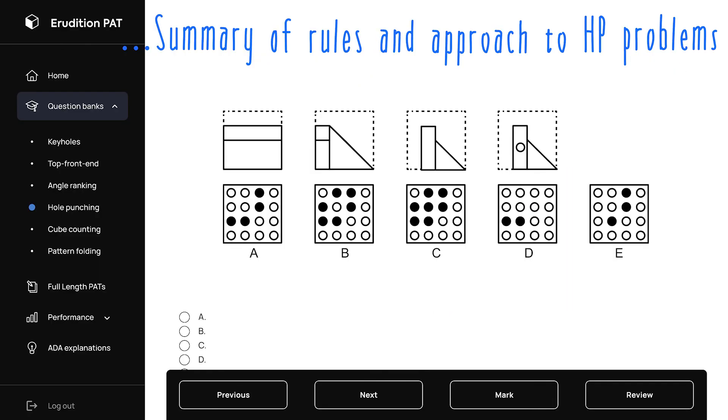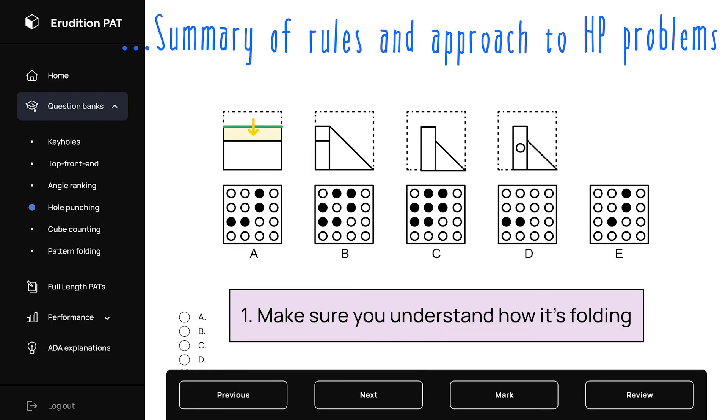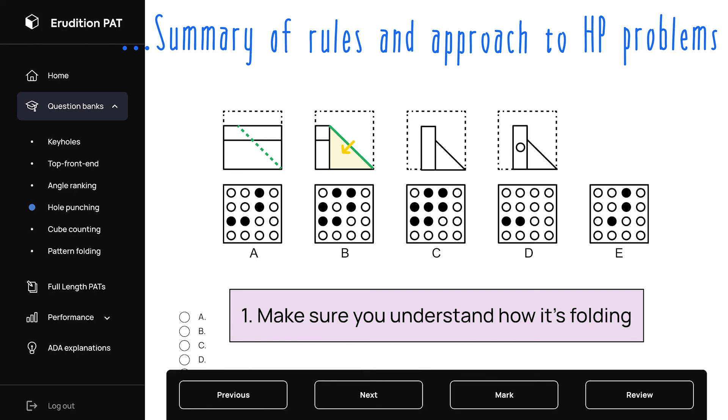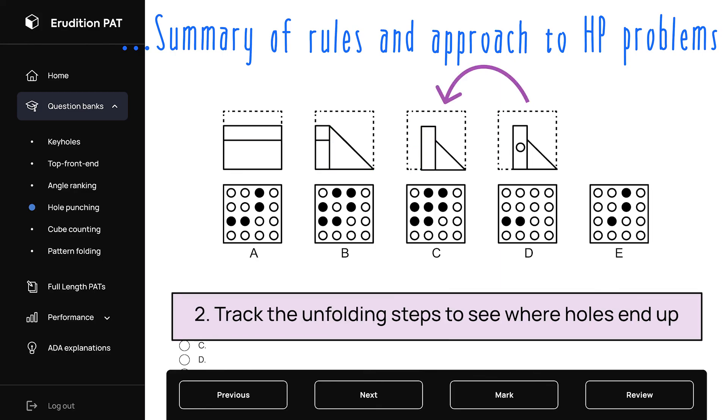When you approach a hole punching problem, make sure to first understand how the paper is folded. To answer the problem, track each unfolding step backwards, taking note of where any holes end up. You can do this in your head. Or you may find it useful to use your scratch paper to draw the hole punching grid for yourself and keep track of your holes there.